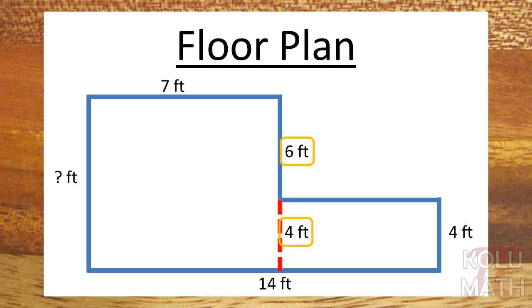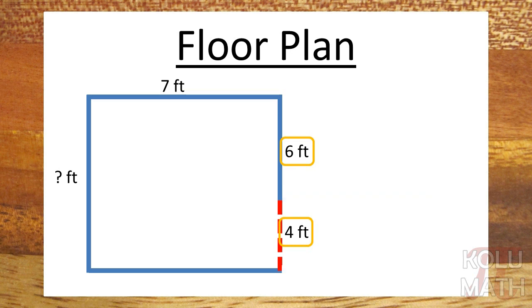Okay, so take a look at that. I know that one piece is 6 feet, the other piece to the side is 4 feet, so I can go ahead and add those two together and find out that the left side is 10 feet long. So the height of the rectangle there is 10 because the right side is 6 and 4.